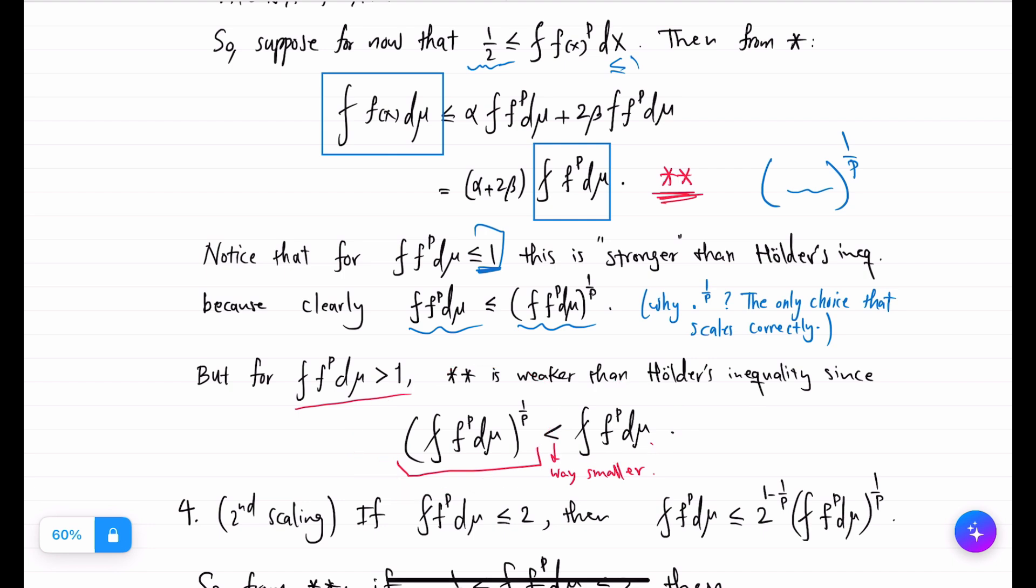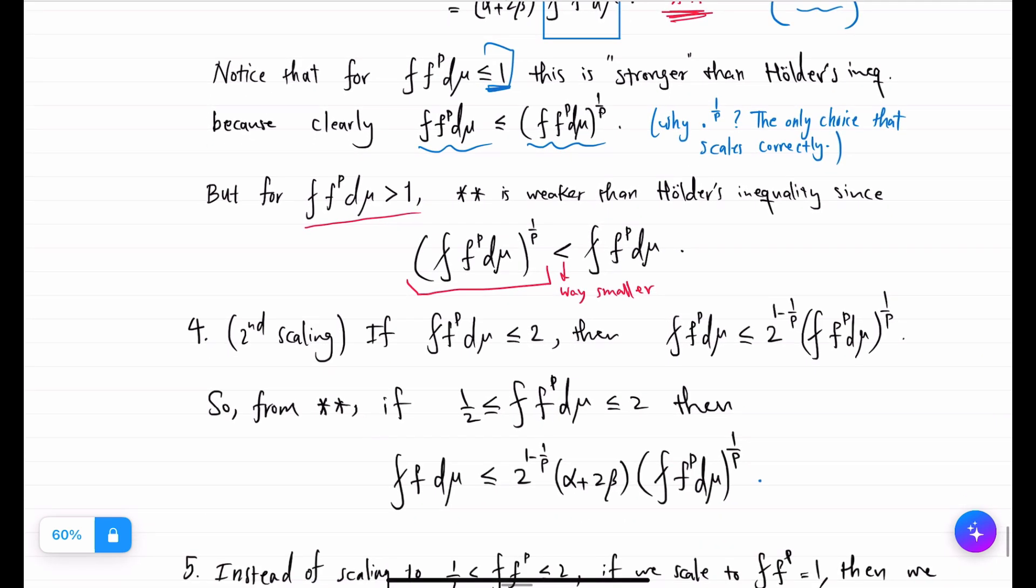We can retain some control between the pth root and the number if it is not too large. So if there is some control, let's say 2, then integral average of f to the p to the power 1 over p, if we help it with a tiny bit we'll still beat a bigger one.